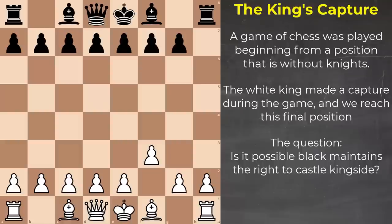So the black pawn must have moved. If it's here, there's still a problem because it's defended by the pawn — this piece never moved. So in order for the black pawn to be captured, it needed to be on one of these three squares. That's something we can say.